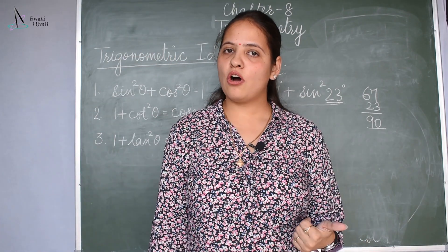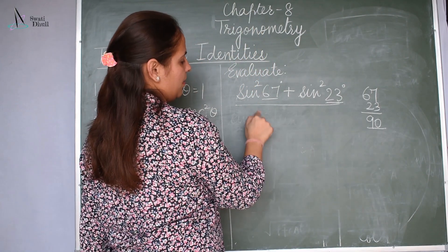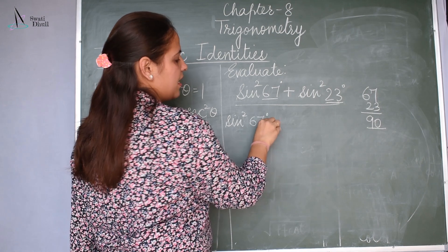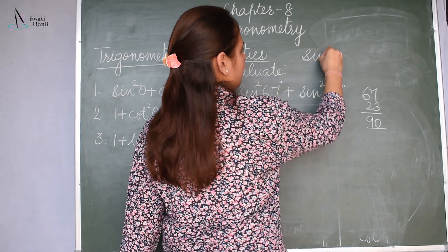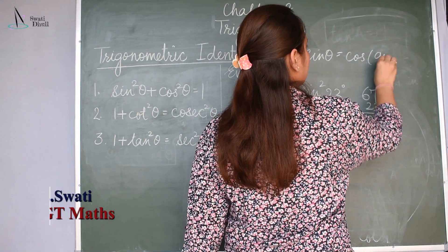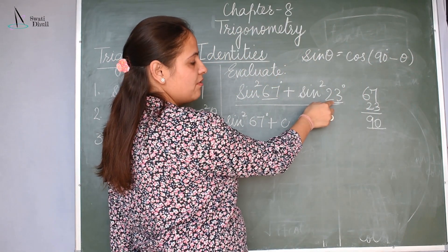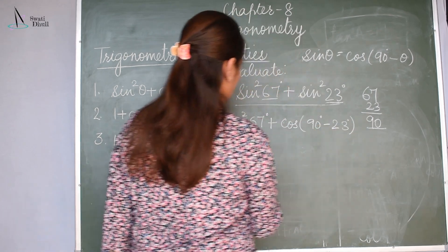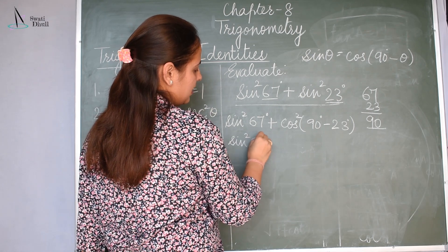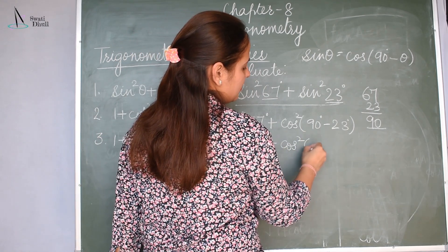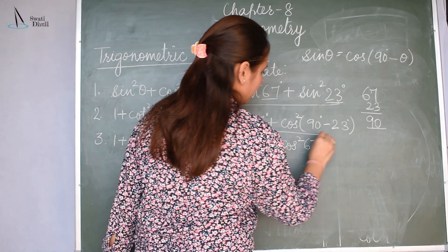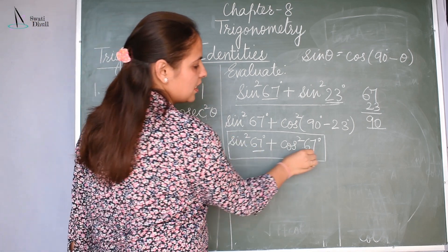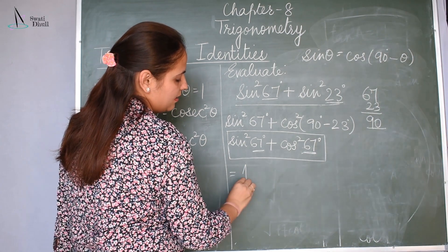We have already done the trigonometric ratios of complementary angles. Sin and cos are complementary to each other, so we can change either of them. Sin square 67 will remain as such, and sin square 23 can be written as cos of 90 minus 23 degrees, which is cos 67 degrees. So this becomes sin square 67 degrees plus cos square 67 degrees. Using the identity sin square theta plus cos square theta equals 1, in place of theta we have 67, so the answer is 1.